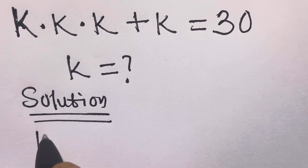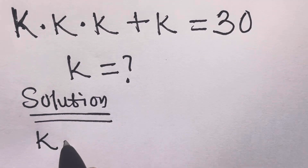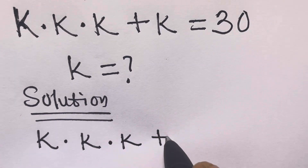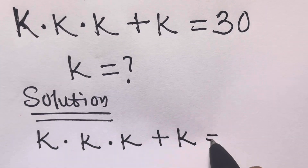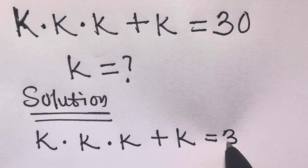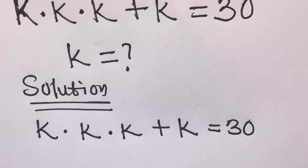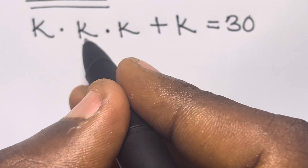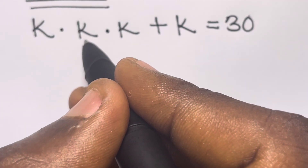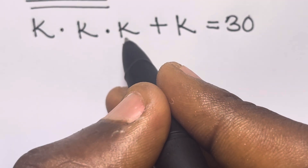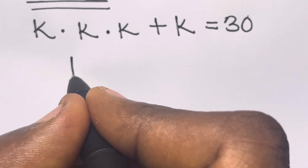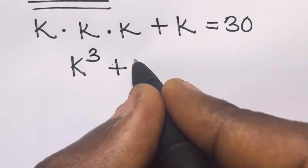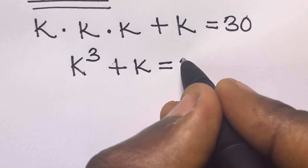So we have k times k times k plus k equals 30. We can simplify k times k as k squared, and k squared times k gives us k cubed. So we have k to the power 3 plus k equals 30.